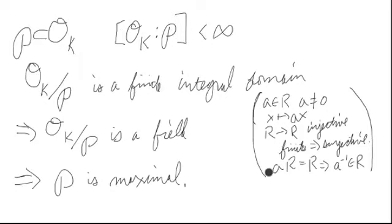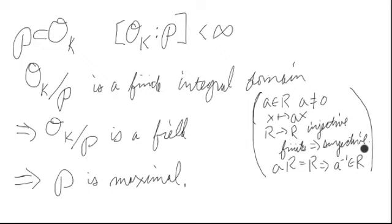A little description for why a finite integral domain is a field: if you take non-zero elements and multiply by them, that's like having an injective homomorphism where the domain and codomain are finite. It's injective because of what it means to be an integral domain — you have nice cancellation. Since things are finite, this injective map is actually surjective, so AR = R, which includes 1, meaning we can find an inverse for every A. So we have a field.